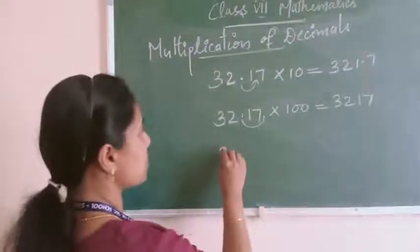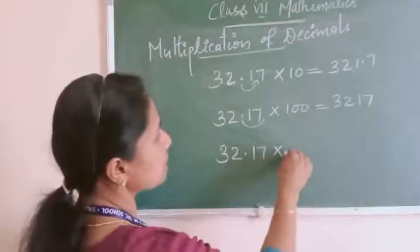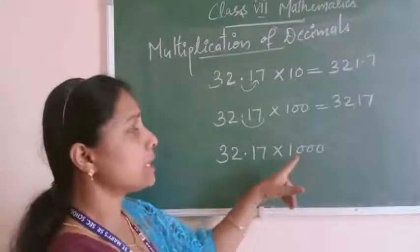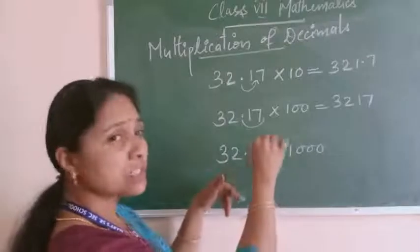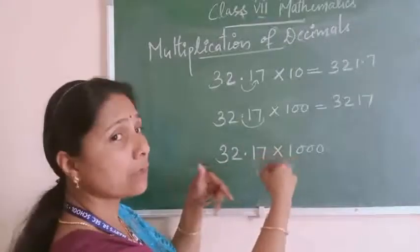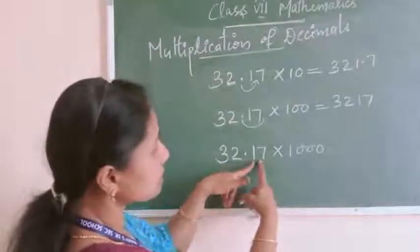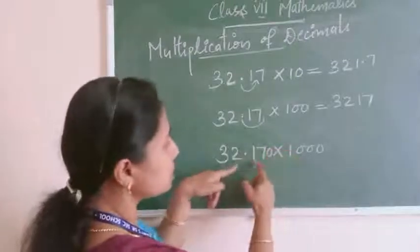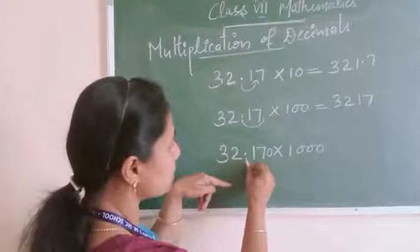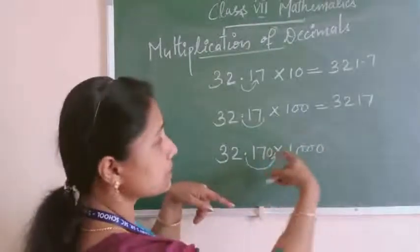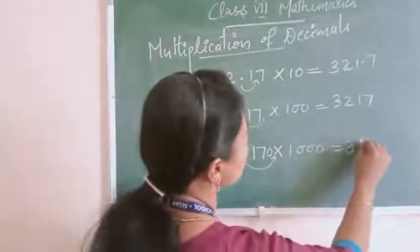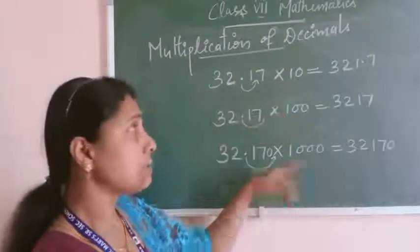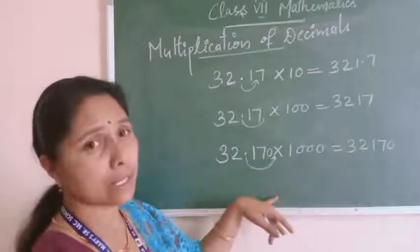See another example: 32.17 multiplied by 1000. For multiplication by 1000, you also just shift the point — you put the point after three digits. But in the question, after the point only two digits are given. So you can put one zero to make it three digits, then shift the point. The point comes after zero, and since there is no digit after it, your answer is 32170. This way, you can multiply a decimal number easily by 10, 100, 1000, and so on.